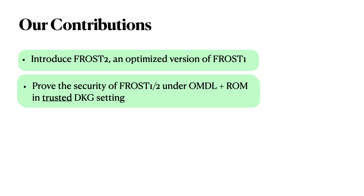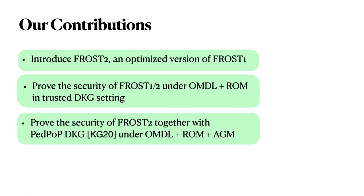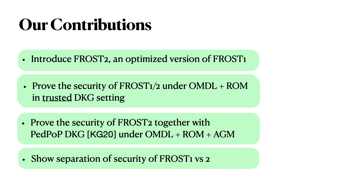This assumes a trusted DKG. We also prove the security of FROST 2 together with the distributed key generation protocol proposed in the original FROST paper, which allows any number of corrupt signers up to T-1 — in particular, it allows a dishonest majority. Finally, our security hierarchy reveals a separation in the notions of security achieved by FROST 1 and FROST 2. To conclude, both schemes achieve some of the highest notions of security in our framework.